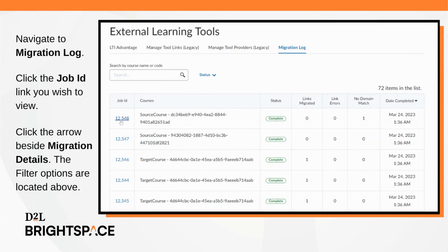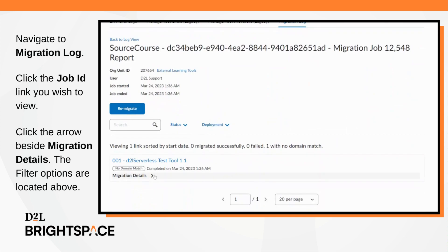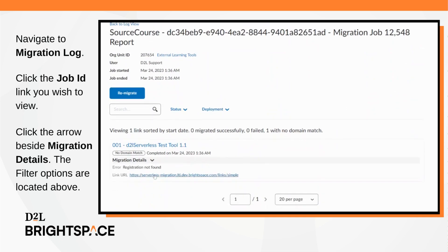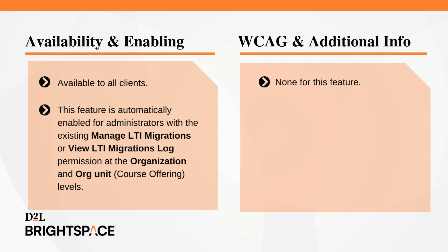Navigate to external learning tools, migration, and click the job ID you wish to view. Select the arrow beside migration details to view those details. The filter options are located above. The LTI feature is available to all clients and is automatically enabled for administrators with the existing manage LTI migrations or view LTI migrations log permission at the organization and org unit course offering levels.